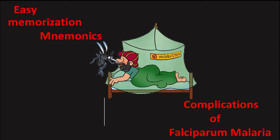Before we start, let's talk about what is falciparum malaria. Plasmodium falciparum is a unicellular protozoan parasite of humans and the deadliest species of Plasmodium that causes malaria in humans. The parasite is transmitted through the bite of a female Anopheles mosquito and causes the most dangerous form of malaria — falciparum malaria.